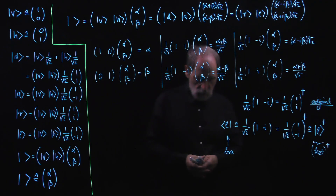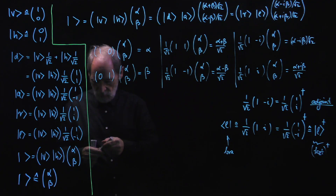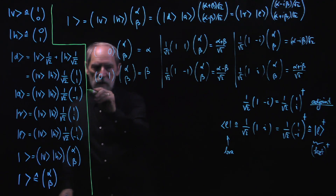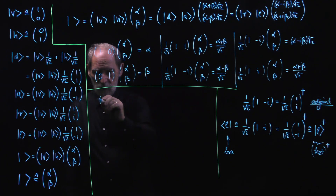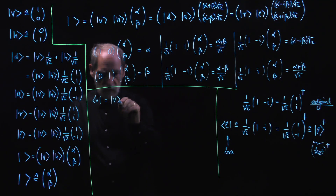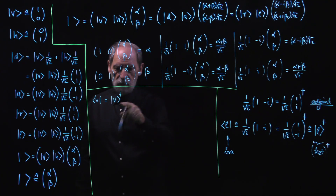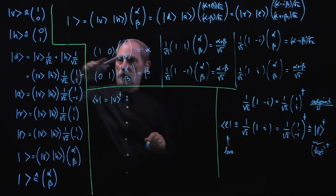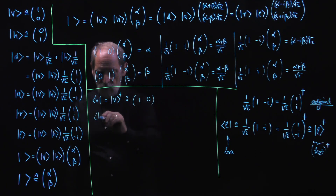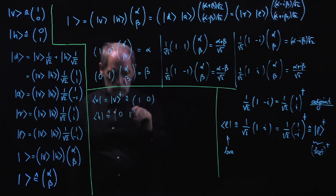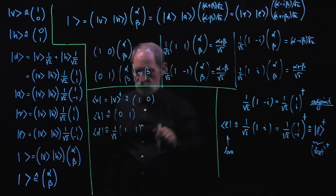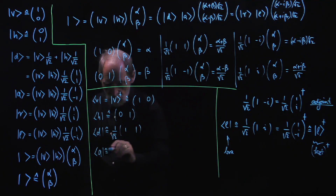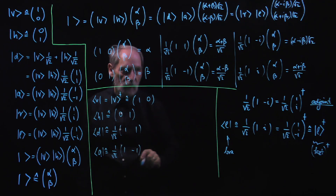What represents the bra that goes with vertical and horizontal polarization? The bra for vertical polarization is the adjoint of the ket for vertical polarization, represented by the row one-zero. The bra for horizontal polarization is represented by the row zero-one, and so forth. For diagonal polarization, the bra is represented by the row one over square root of two, one, one. For anti-diagonal polarization, the bra is one over square root of two times the row one, minus one.